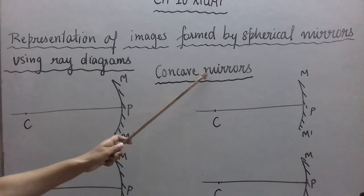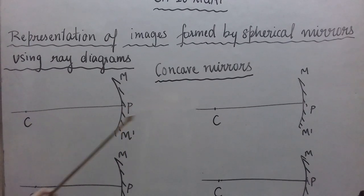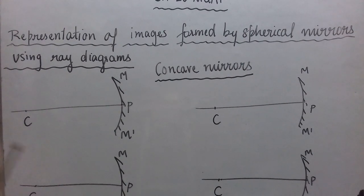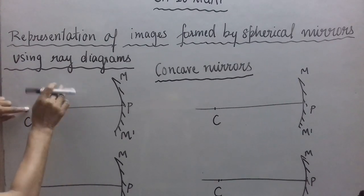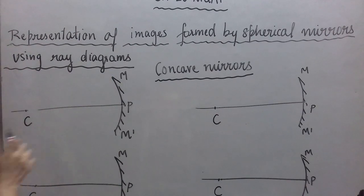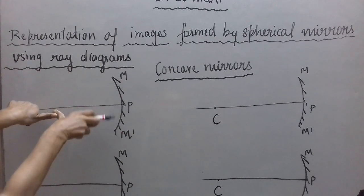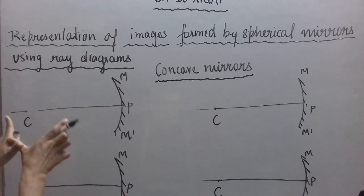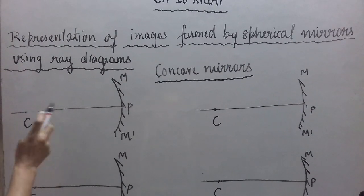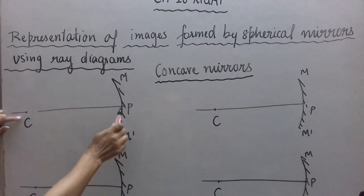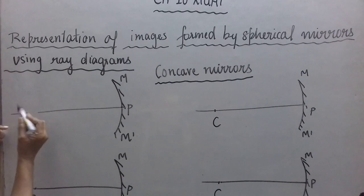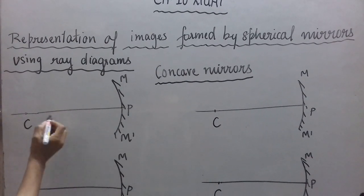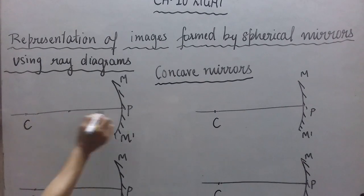Now, how to draw the concave mirror for the ray diagrams first — I have drawn one here but I will show you how you actually draw it. You will take a compass, place the tip at one point, open it wide, keep the tip of the pencil on the other end, and then draw the curve. Remember that you have to open the compass wide so that the radius of curvature CP is greater than the aperture.